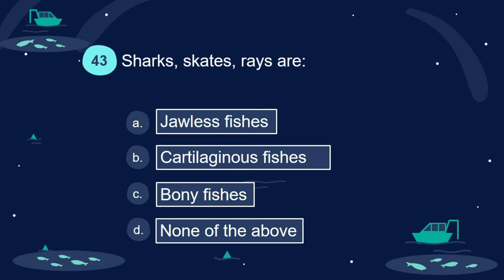Question 43. Sharks, skates, and rays are: A. Jawless fishes. B. Cartilaginous fishes. C. Bony fishes. D. None of the above.